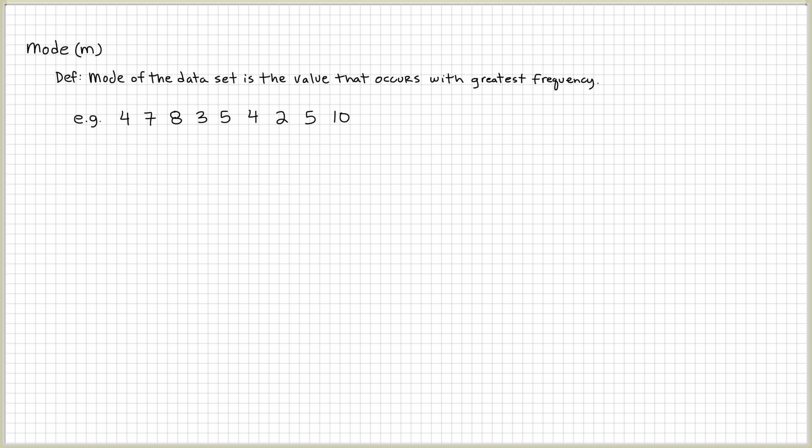Okay, let's do this example. Let's say I have this data set here. And the first thing I want to do to find the mode is to put the numbers in order from smallest to largest.